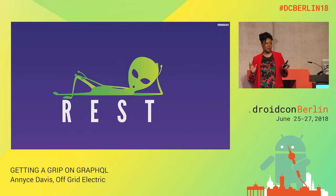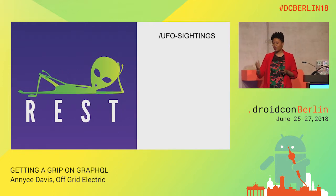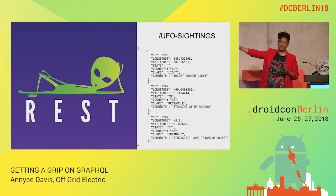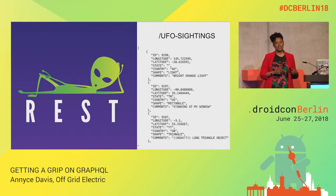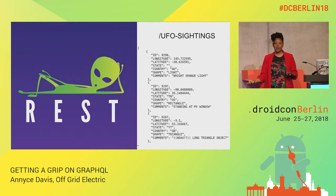Let's talk about REST. If you wanted to get a list of UFO sightings, you'd have some sort of endpoint, make your request, and get back the list of data. But if you only wanted the ID and the shape, you're getting all this other data anyway — it's very bloated. Also, if you need to get more things from the API, like not only a list of UFO sightings but also a list of the users who reported them, you may have to make multiple requests.